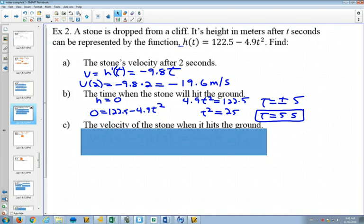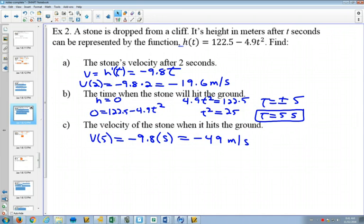And now we can find out how fast it was actually going when it did hit the ground, because we know the time and we have our equation for velocity. So we can just plug in 5, and it's going at negative 49 meters per second. So you can imagine if you were standing on the ground and your friend was throwing you this rock, whether it would be a good idea to catch it or not. Probably not.